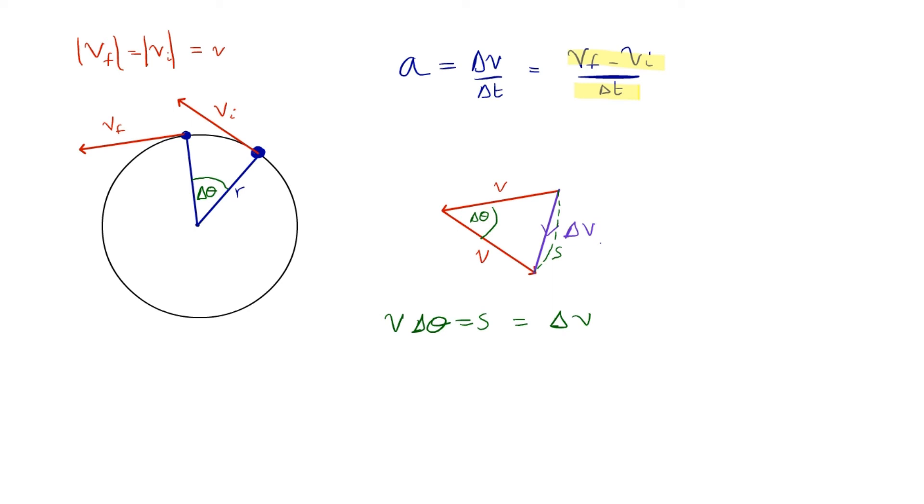And that means that I can go back to my original equation up here and I can plug in the following. So I can say, well, yes, delta v over delta t is what we're after. Delta v, I'm now saying is v delta theta. I'm dividing that by delta t. But of course, delta theta by delta t, we know and love.